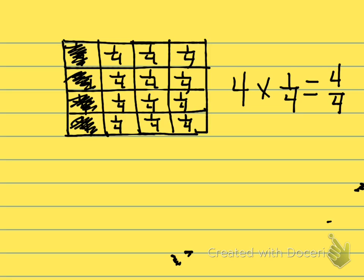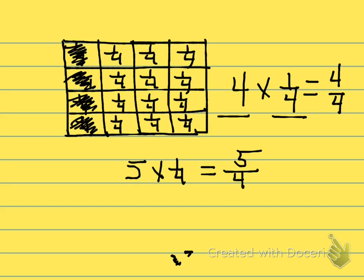So what have you noticed in the pattern? When I multiply a whole number times a unit fraction, the denominator stays the same. What happens to the numerator? I'm multiplying the whole number times the unit fraction's numerator of one. Four times one equals four. And once again, what happens to that denominator? The denominator stays the same. What do you think would happen if I had five times one-fourth? Yes, the denominator would be four and my numerator would be five, so the answer is five-fourths.